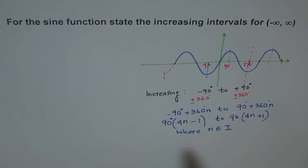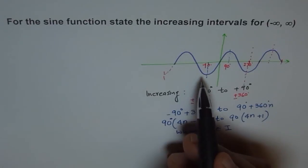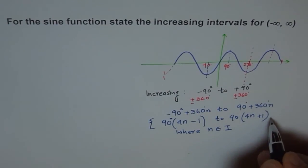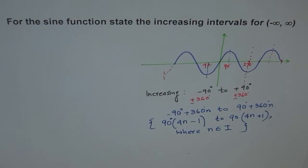So you can write your increasing interval as 90 degrees within bracket 4n minus 1 to 90 degrees 4n plus 1. You see that? That is how you get your general formula for increasing intervals for a sine function. And that is the way to do it. And since n is an integer, we are considering on both negative and positive side. And this we will put it in set form, and that becomes our increasing interval. That is how this problem should be tackled. I hope you understand. Thank you.